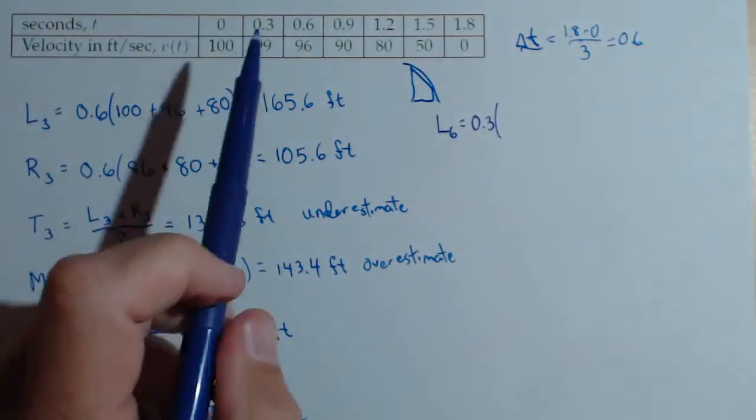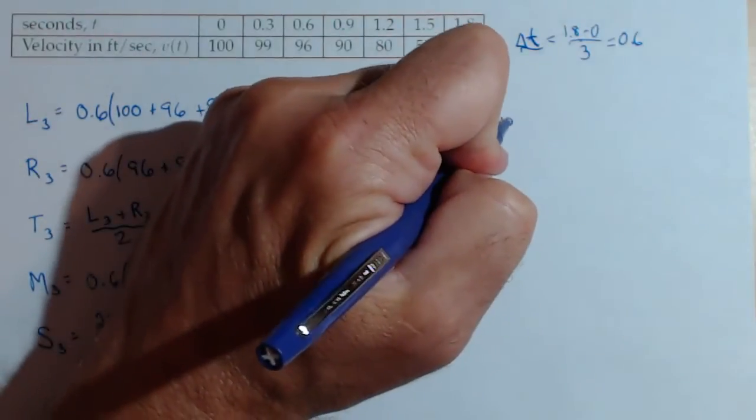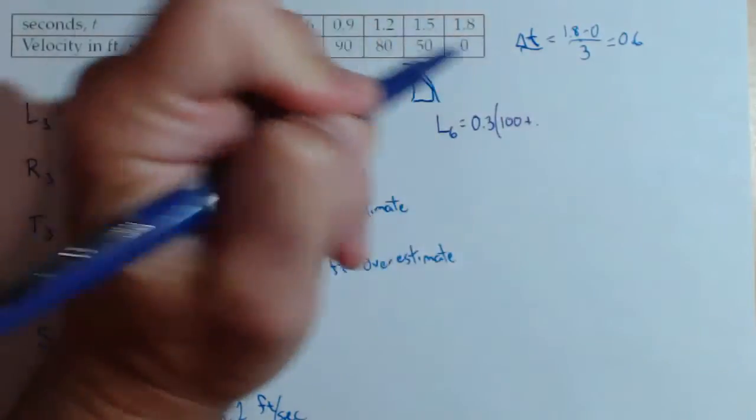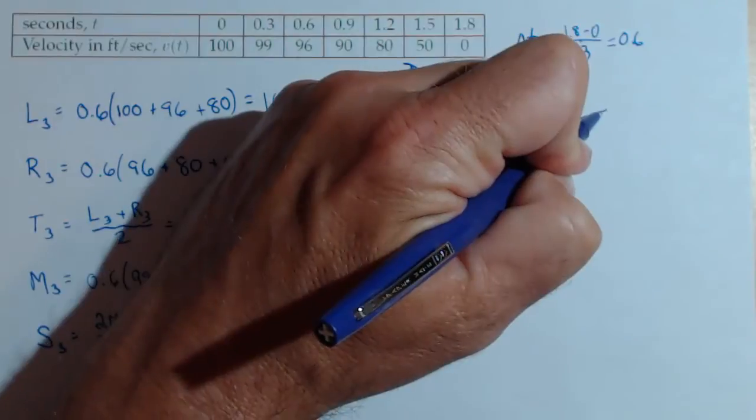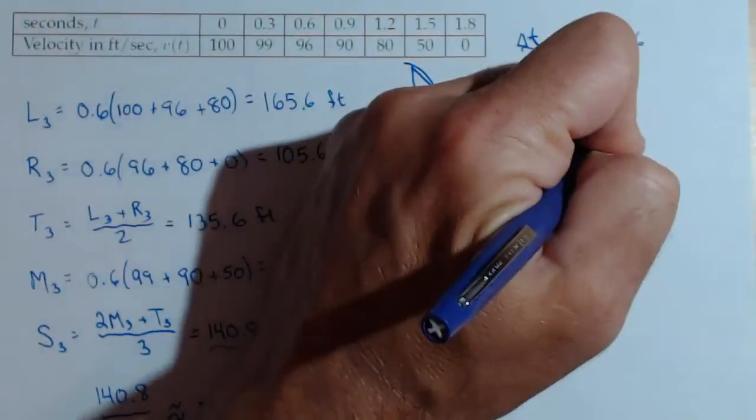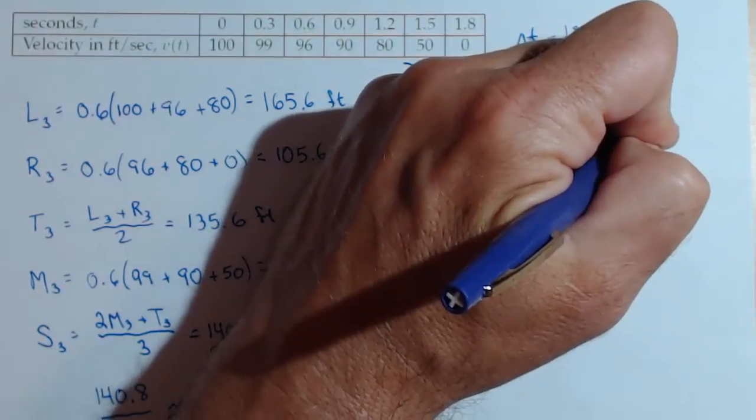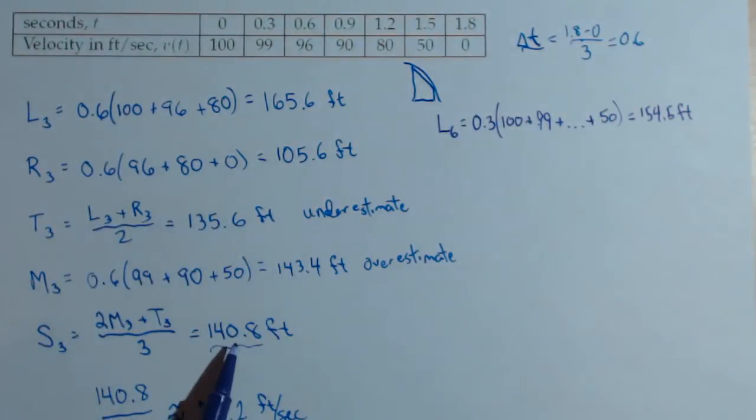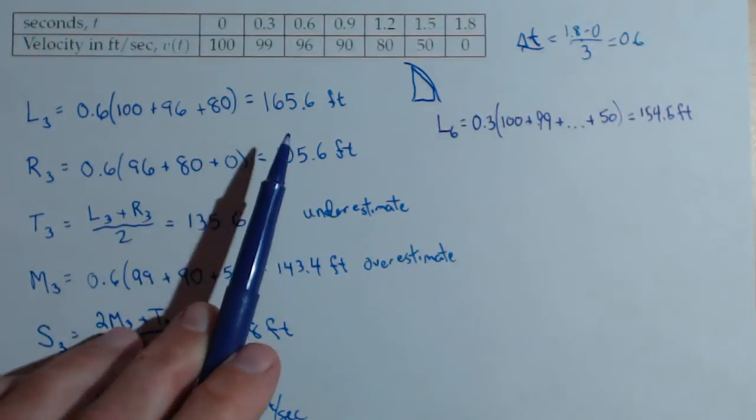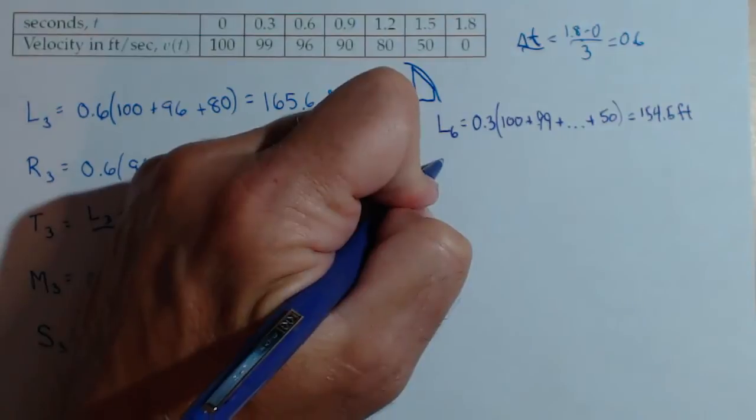And we're using each left-hand point. So we're going to start at 100, end at 50. So we're going to do 100 plus 99 plus, for time's sake, we're going to end at 50. And that comes out to be 154.5 feet. Closer to what we got from Simpson's rule than with three rectangles, what we would expect. It's going to be more accurate. We're using more data.